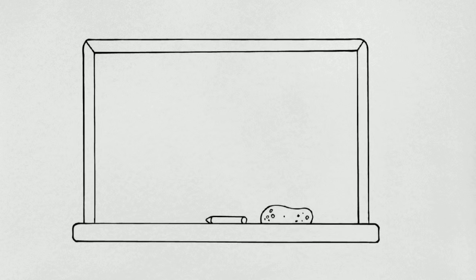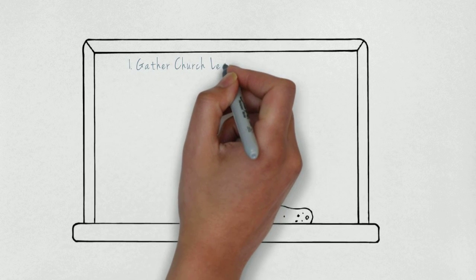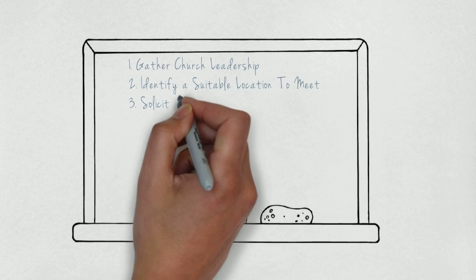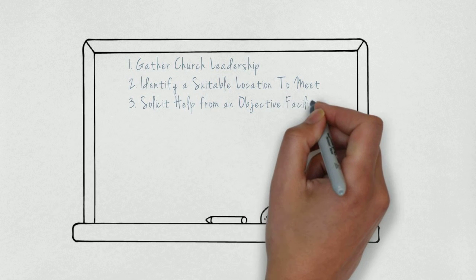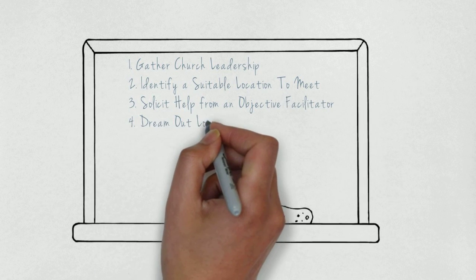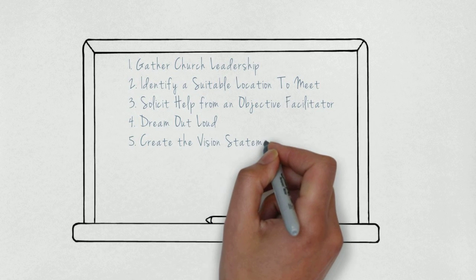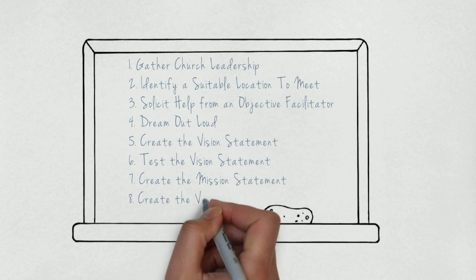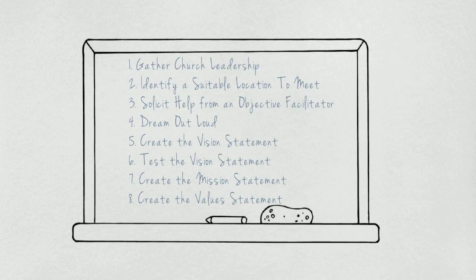In summary: one, gather church leadership; two, identify a suitable location to meet; three, solicit help from an objective facilitator; four, dream out loud; five, create the vision statement; six, test the vision statement; seven, create the mission statement; eight, create the value statement. Many churches fail to come up with a vision, mission, and value statement because the process scares them, but with the right people in the room it can be done in a few short hours.